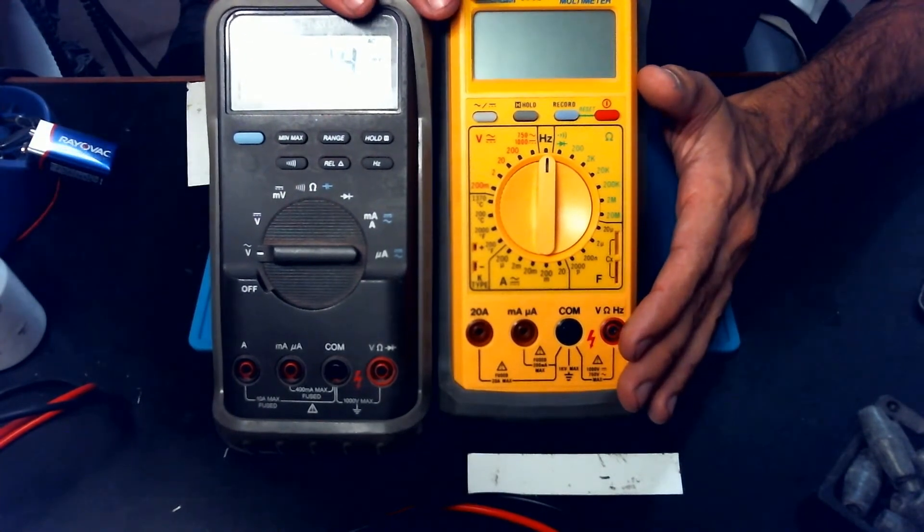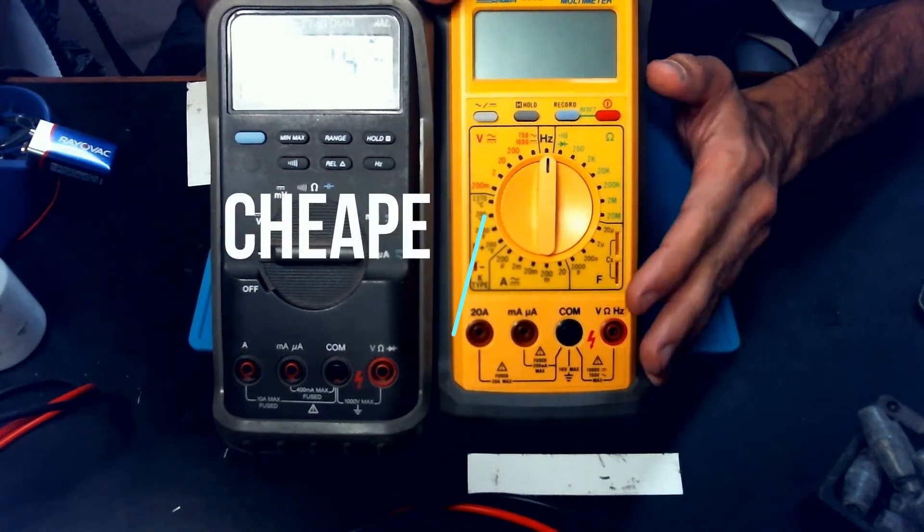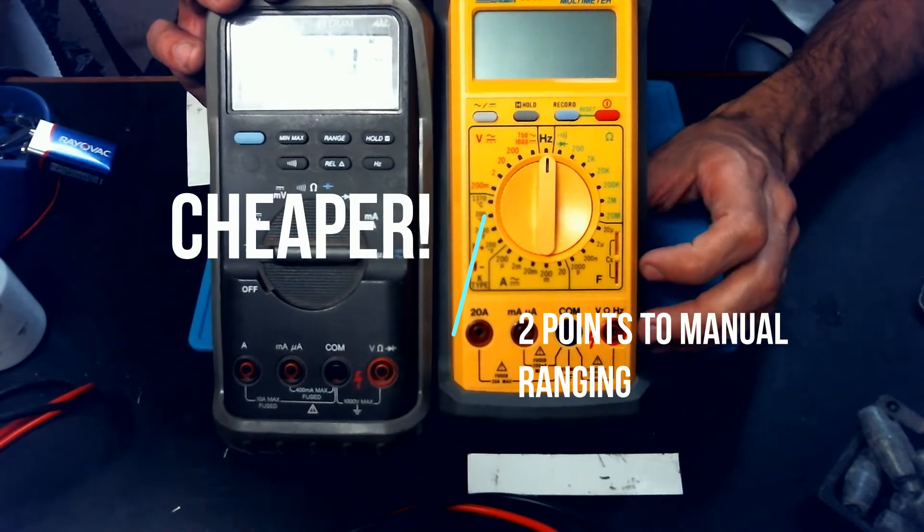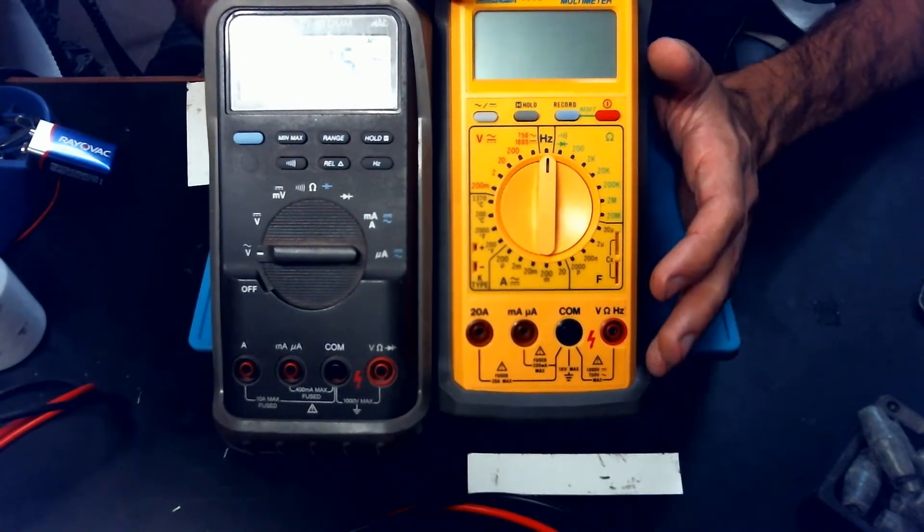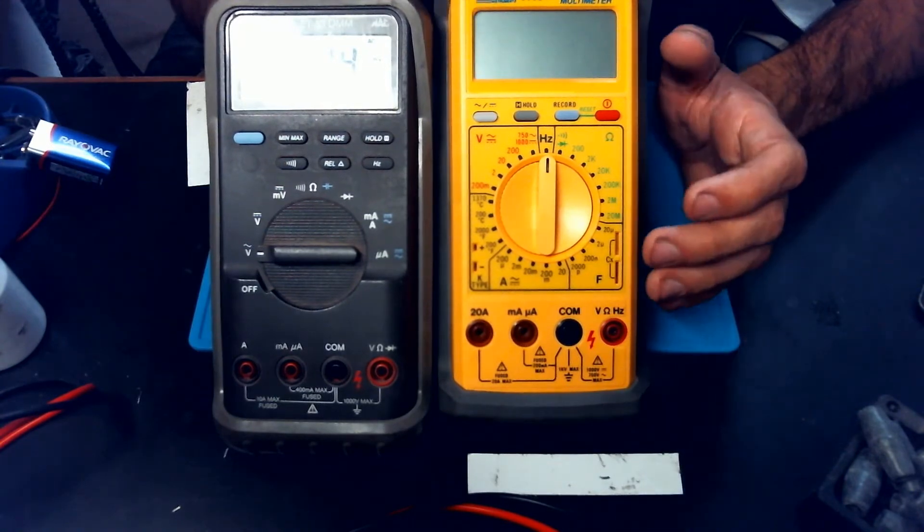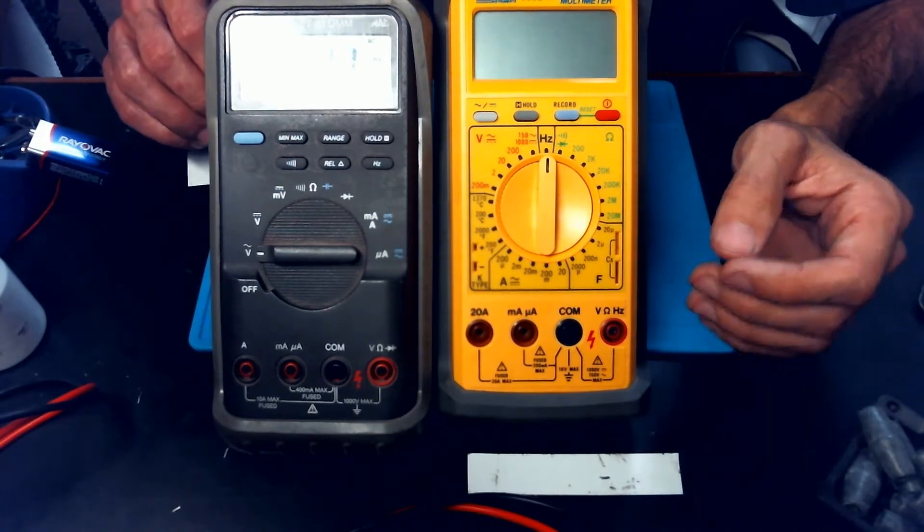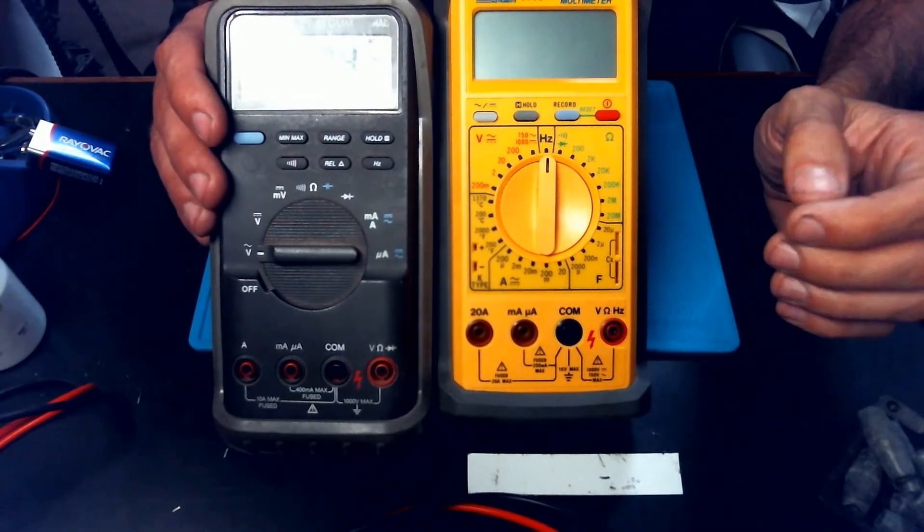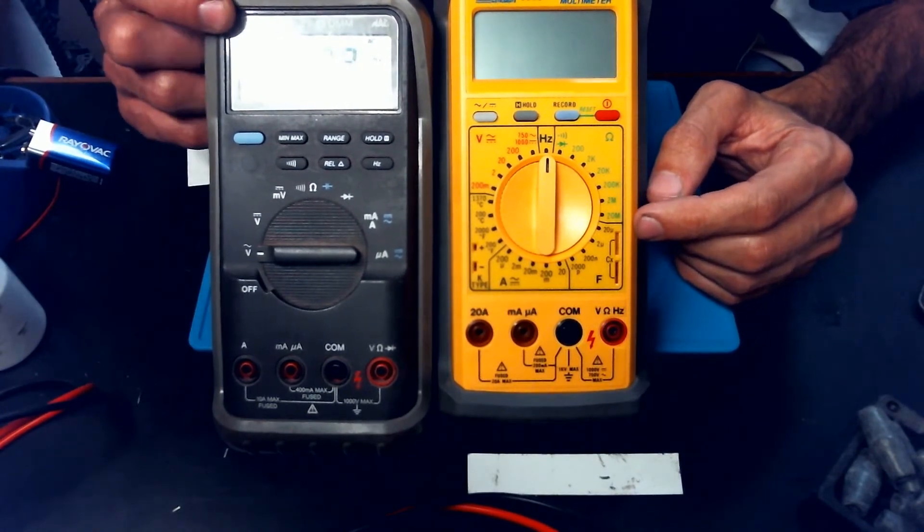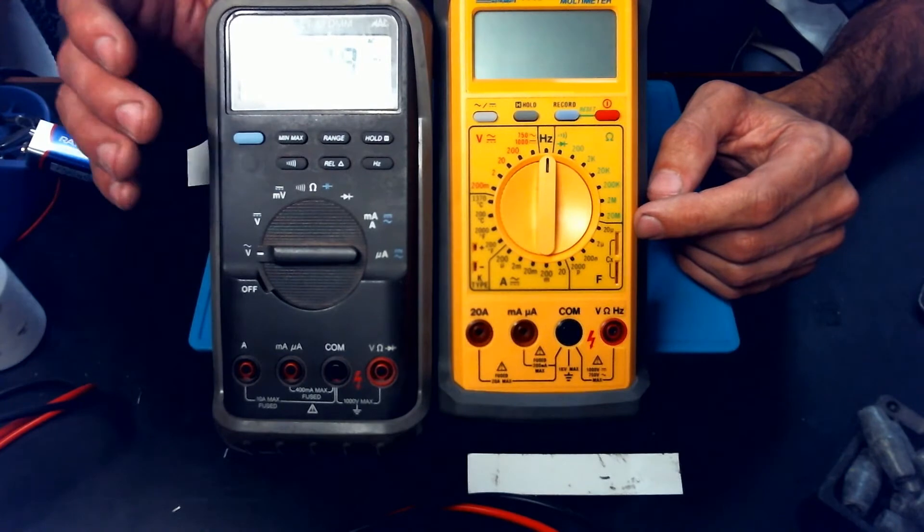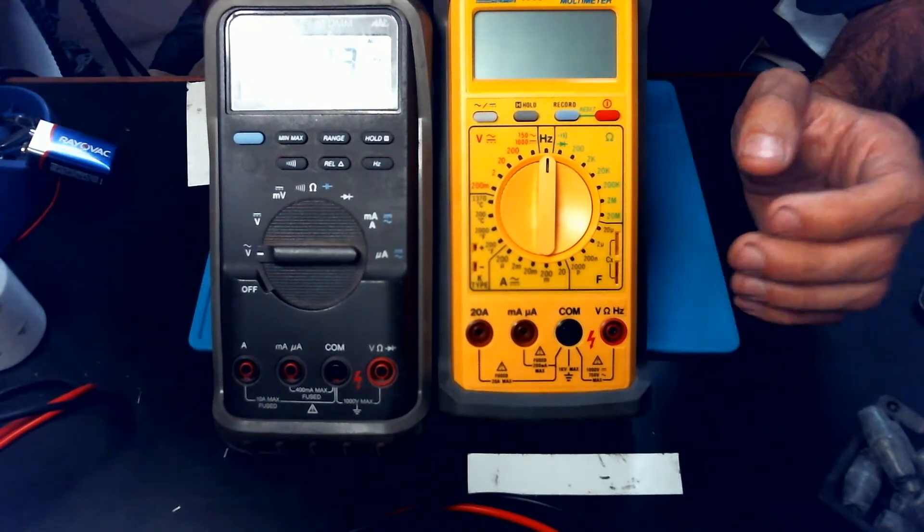All right, the second pro to a manual-ranging meter is that they do often cost less than auto-ranging meters. That's because there's a little bit less processing power, for lack of a better word, in a manual-ranging meter. And so it often reflects that within the cost of it. Now, in all actuality, this X-TEC cost a little bit more than this 83 did. However, the 83 was actually bought as a non-working meter, and I repaired it. The X-TEC is actually in really, really good condition.